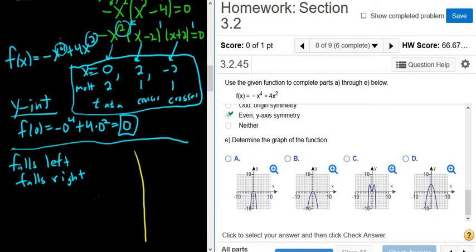Boom. There's the y-axis. There's the x-axis. Okay, so we have a couple zeros, zero or x-intercepts. Zero, two, and negative two. Those are the x-intercepts.